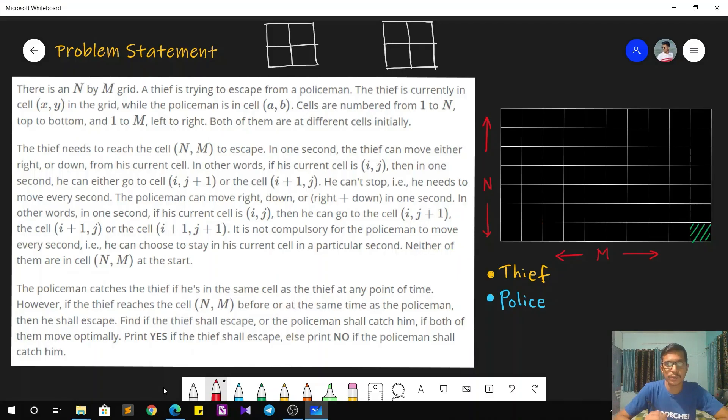The problem statement goes as follows. We are given an N cross M grid and there are two people present in this grid. One is the thief and one is the policeman. Initially, the thief is present at the cell (X,Y) while the policeman is present in the cell (A,B). So let's mark these two cells on our grid. We will be using yellow color for the thief. The thief is present over here, this is the cell (X,Y), and the police is present over here at (A,B). These are the initial coordinates of the two people.